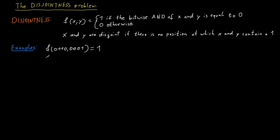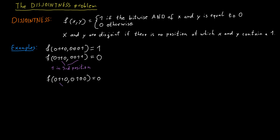But on the other hand, the bit strings 0110 and 0011 are not disjoint because in the third position both of them contain a one. And the bit strings 0110 and 0100 are also not disjoint because in the second position both of them contain a one.